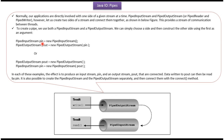Here I have created a PipedInputStream object and a PipedOutputStream object, using the PipedOutputStream constructor which accepts a PipedInputStream — in this way we can connect PipedOutputStream with PipedInputStream. Alternatively, here I have created a PipedOutputStream object and a PipedInputStream object using the PipedInputStream constructor which accepts PipedOutputStream, connecting PipedInputStream with PipedOutputStream.